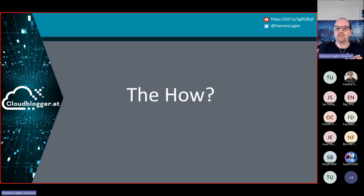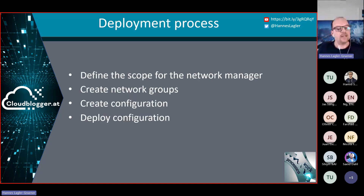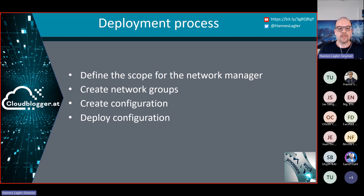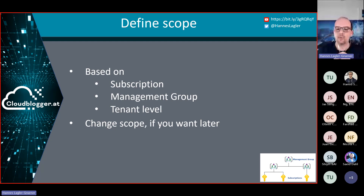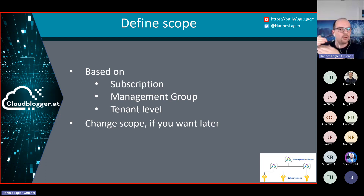To implement network configuration in Azure Virtual Network Manager, the first step is to define your scope. You can start at the subscription level or go one step higher to the management group level. If required, you can also implement a tenant-level scope and include another tenant in your configuration. You can change the scope later — start small with one subscription and scale up to the management group level. No worries, I'll show this in a few minutes in the live demo.